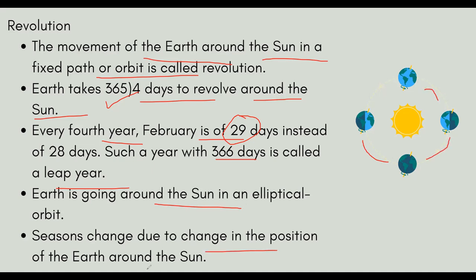Seasonal changes are also happening because the Earth is moving around the sun. As the Earth revolves, the sun's position changes relative to different areas, and all the seasonal changes happen because of this.